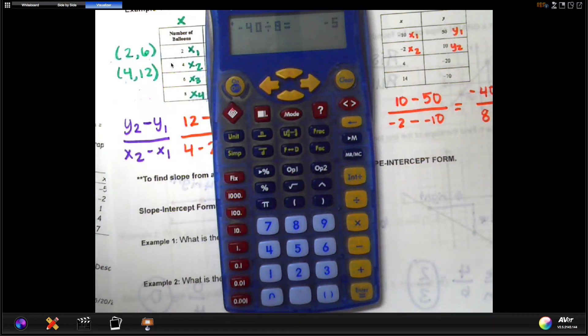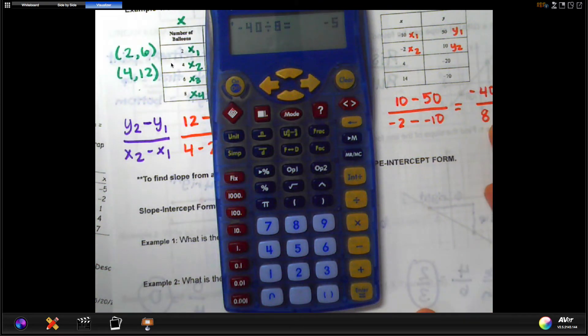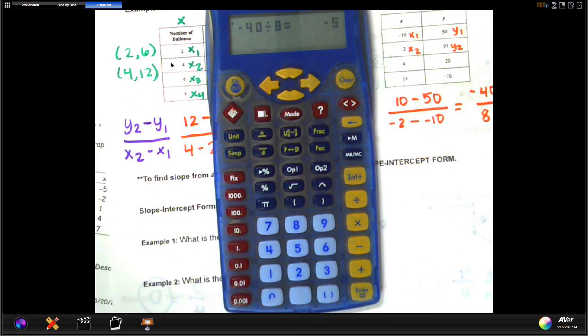But, again, you can also use your knowledge of integers knowing that a negative divided by a positive should give you negative. And, again, that's giving us our slope or our rate.